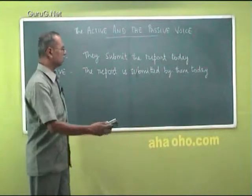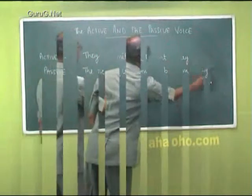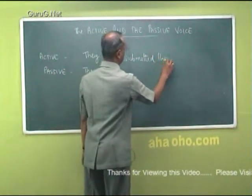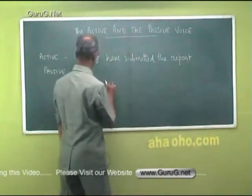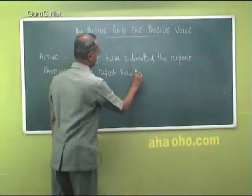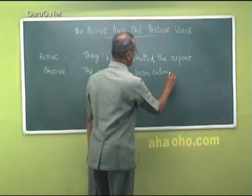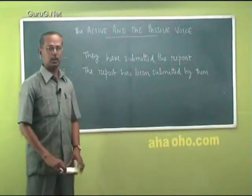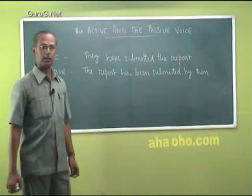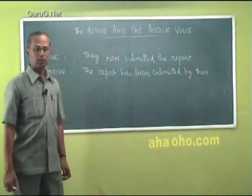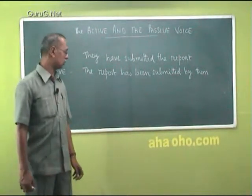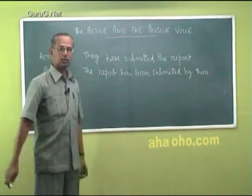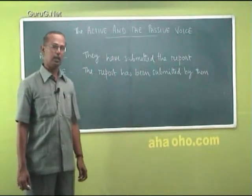We move on to the present perfect tense and its usage. This sentence is in the present perfect tense: 'they have submitted the report.' In the passive construction, the auxiliary verb is added. The passive form is 'the report has been submitted by them,' so that the same tense is kept alive in the passive construction also.